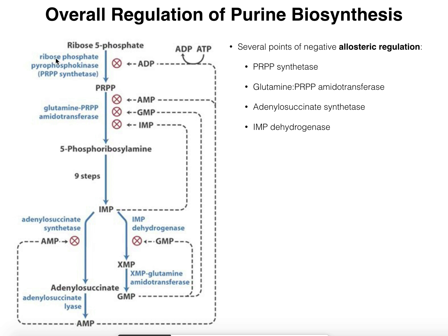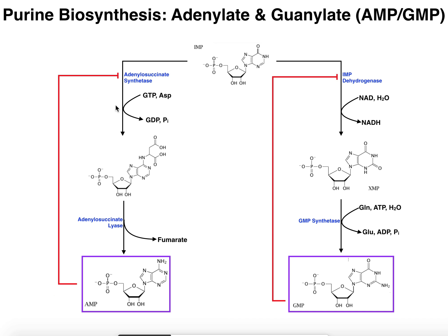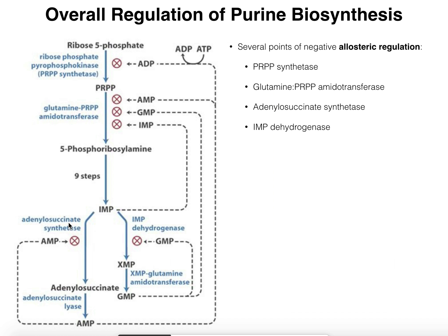Let me introduce you to this figure. We start with ribose 5-phosphate, and PRPP synthetase — also called ribose phosphate pyrophosphate kinase — converts ribose 5-phosphate into PRPP. The second enzyme, glutamine PRPP amidotransferase, converts PRPP to 5-phosphoribosylamine. After those nine steps to IMP, there's no allosteric regulation. But once we get to IMP, both adenylosuccinate synthetase and IMP dehydrogenase are allosteric enzymes.